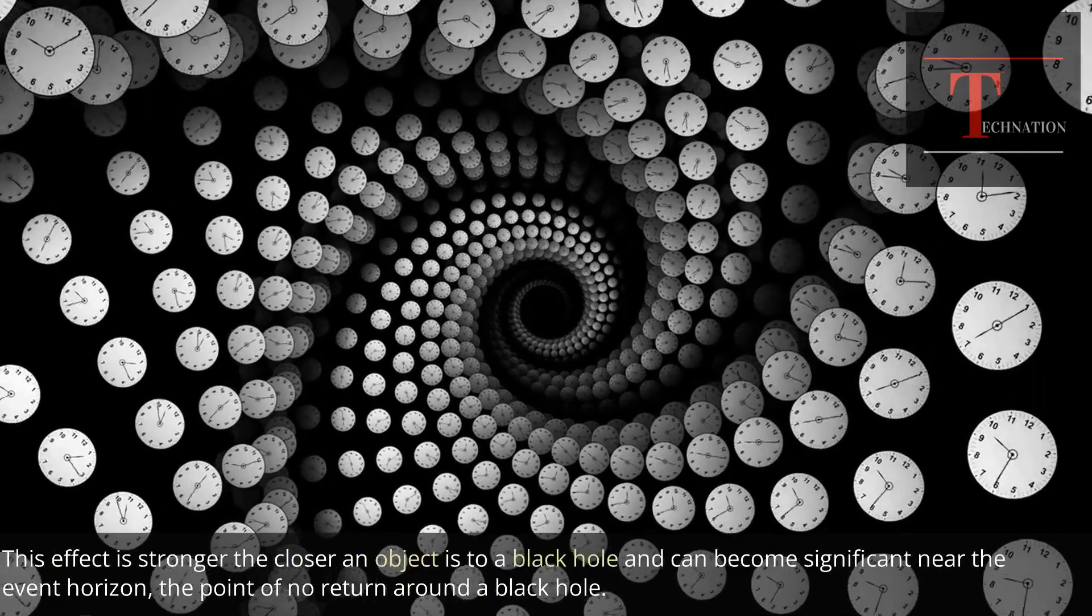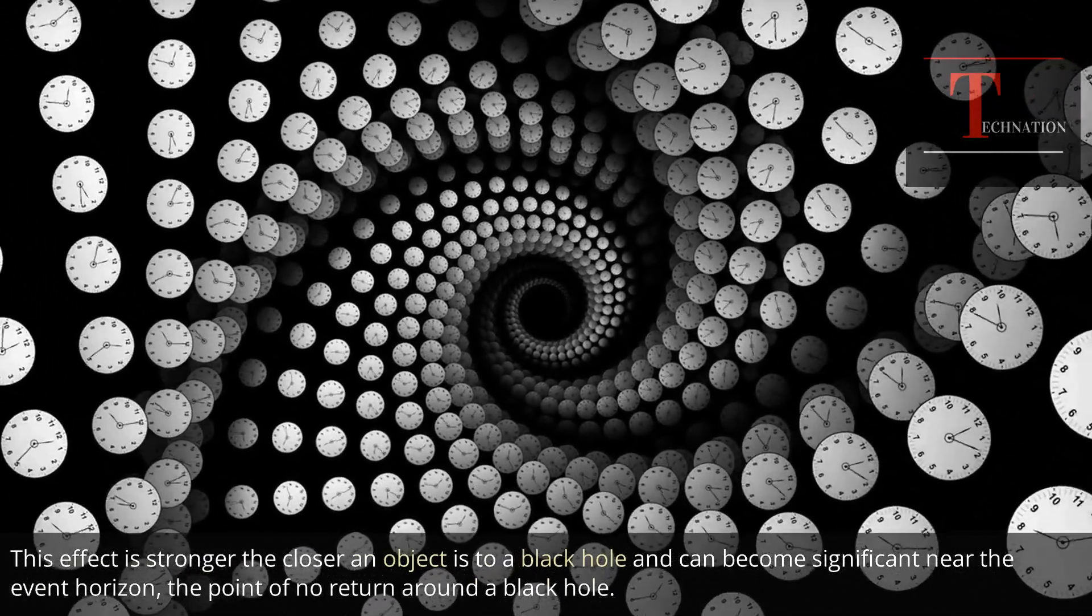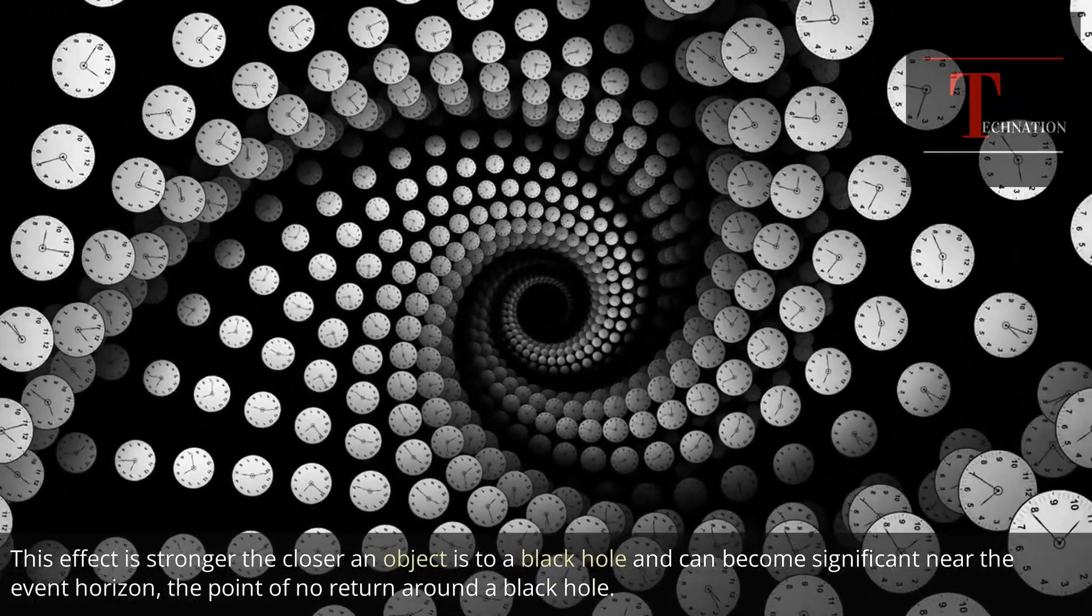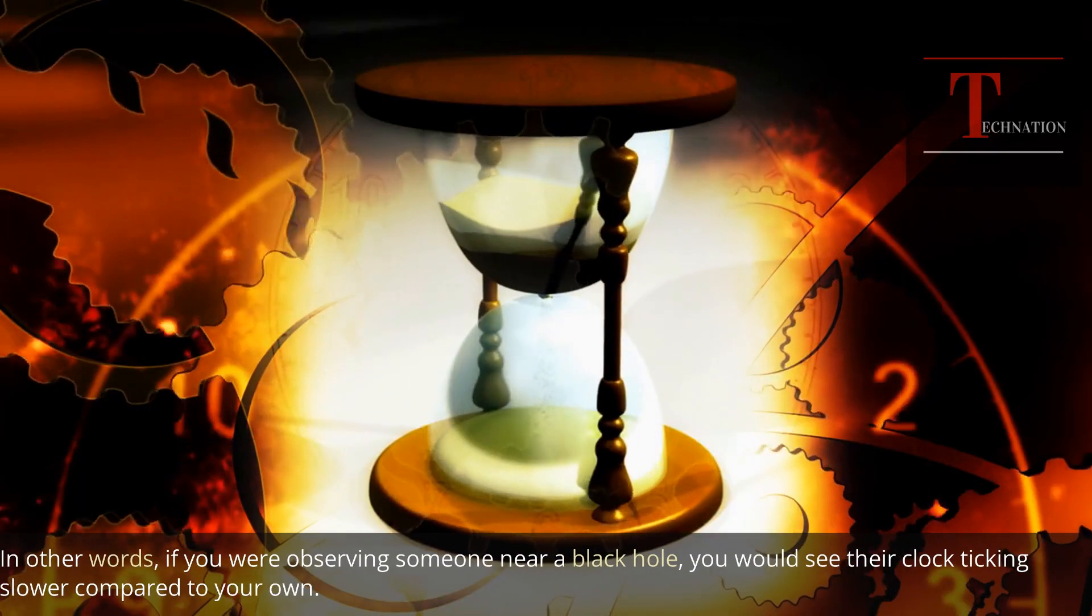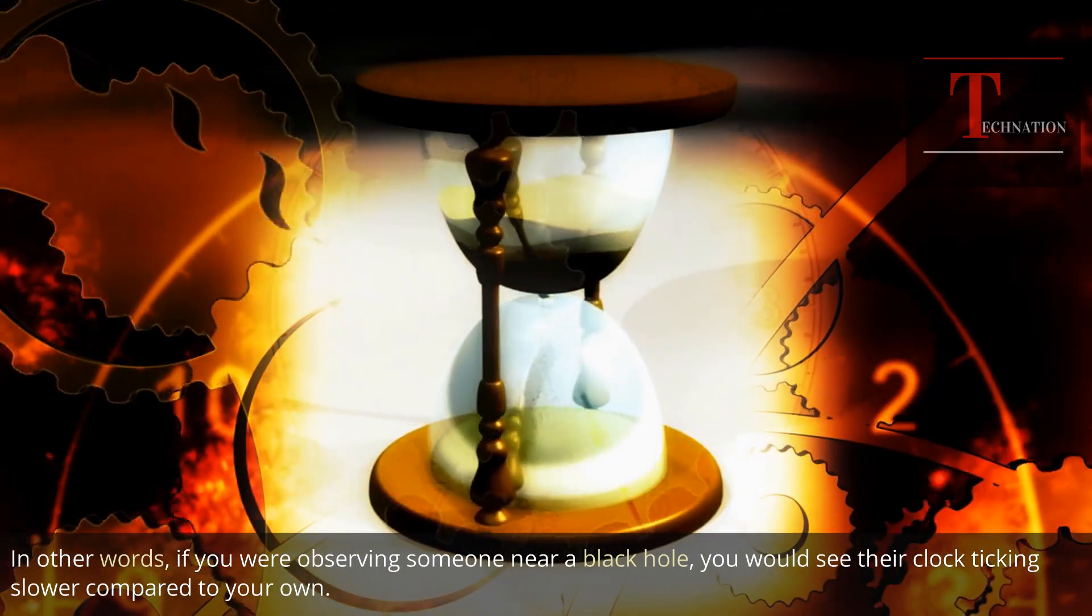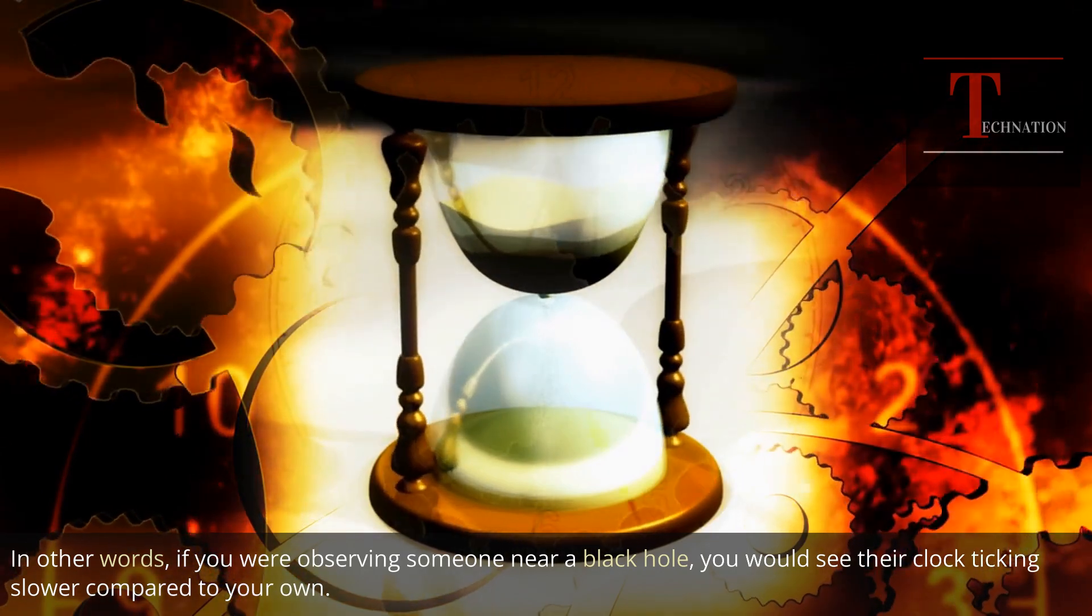This effect is stronger the closer an object is to a black hole and can become significant near the event horizon, the point of no return around a black hole. In other words, if you were observing someone near a black hole, you would see their clock ticking slower compared to your own.